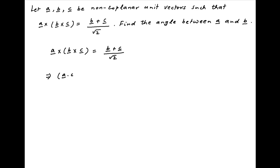The left hand side can be written as a dot c times vector b minus a dot b times vector c. And the right hand side can be written as 1 upon root 2 times vector b plus 1 upon root 2 times vector c.